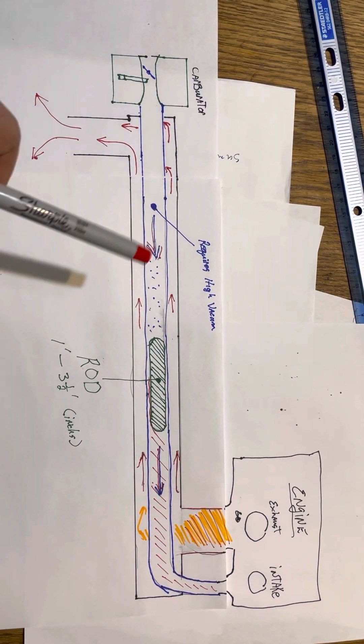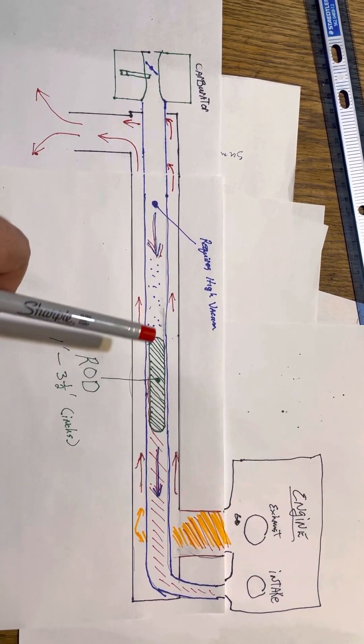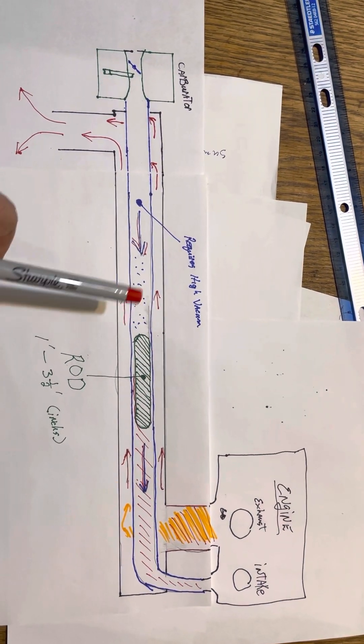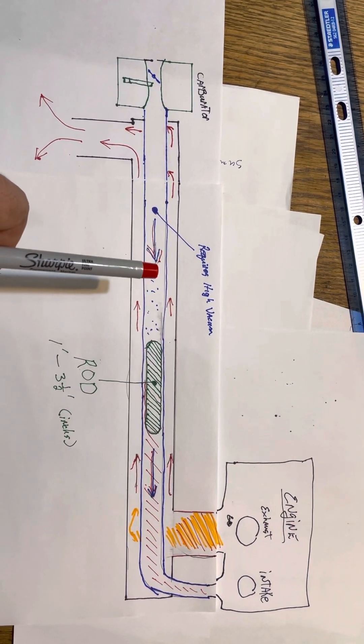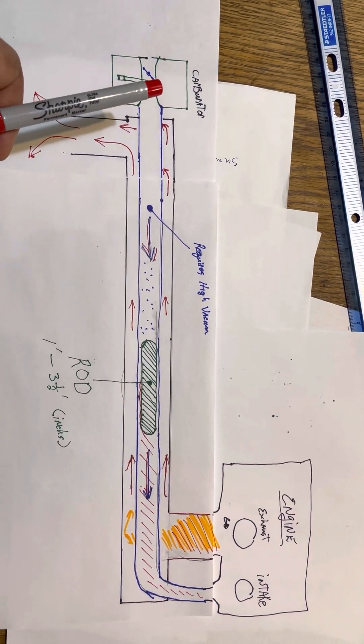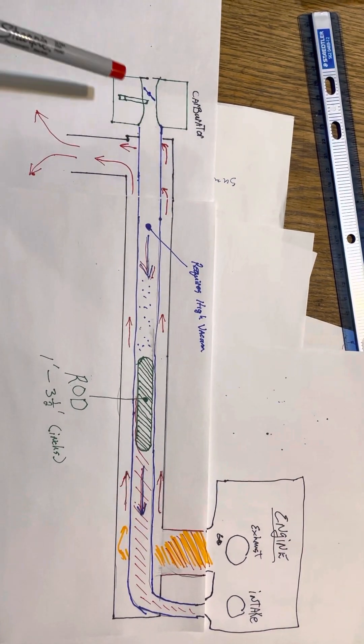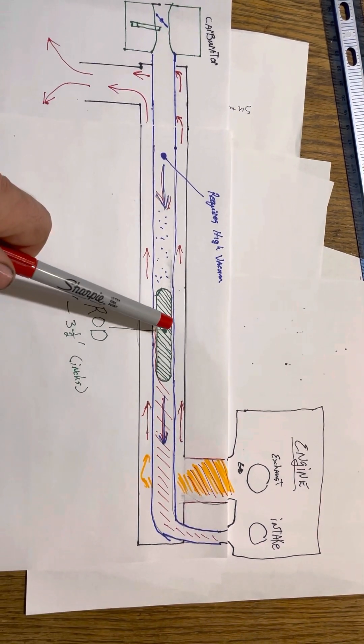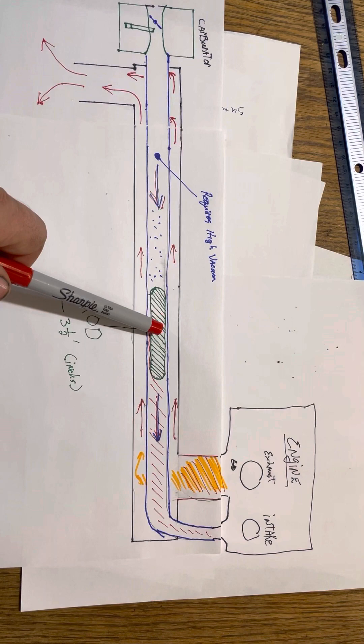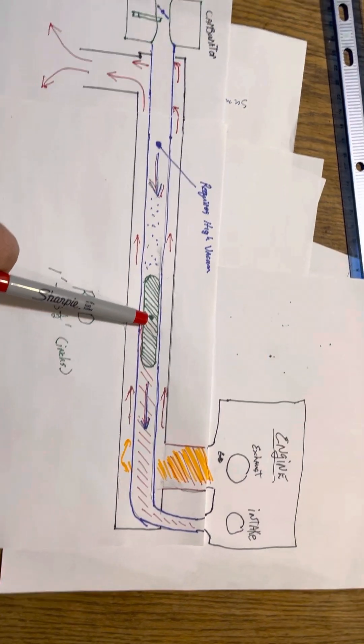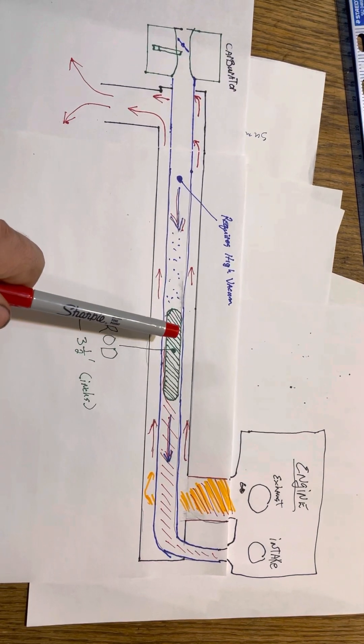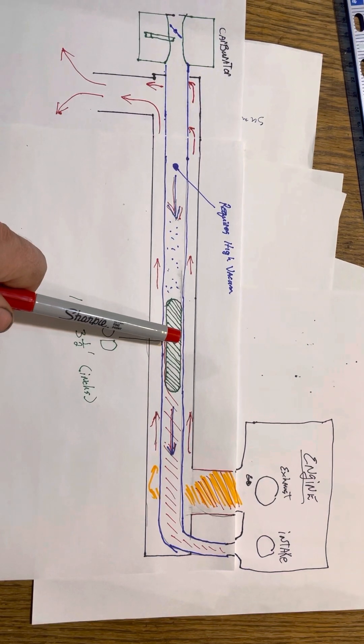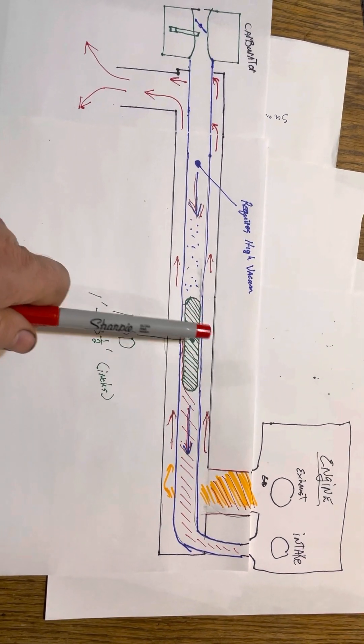Once you get this running good or get far enough along that this engine could, it won't have to be gas anymore. You could burn paint thinner, diesel, alcohol and water. But if you're burning different fuels, the length of this rod will have to be adjusted. The heavier the fuel, the longer this rod is. So I started off with maybe two and a half, three inches.